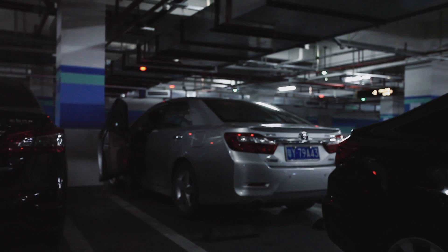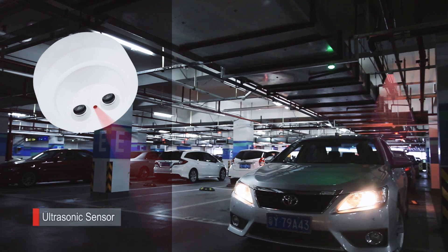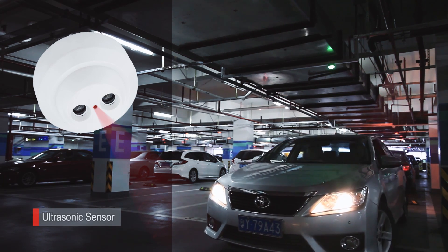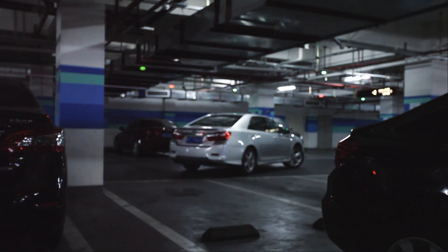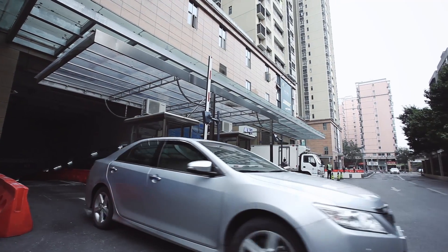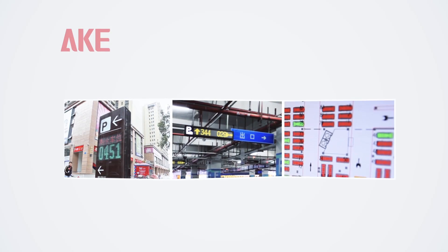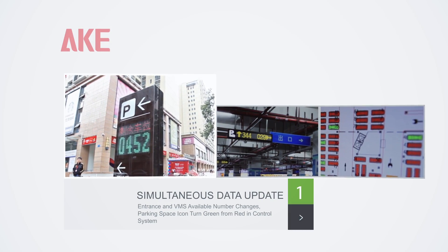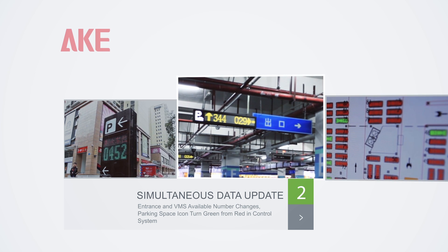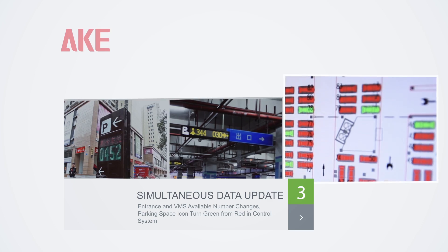When the vehicle leaves the parking space, the indicator light changes from red to green. The VMS outside and inside will change simultaneously, as will the control system, and the parking space icon in the software will turn from red to green.